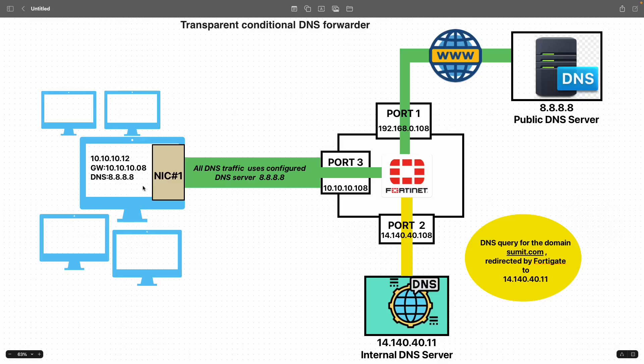This can be achieved on the FortiGate firewall using a transparent conditional DNS forwarder. First, we'll see the network topology.